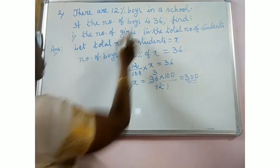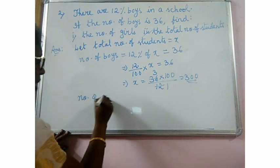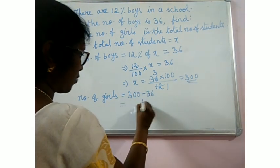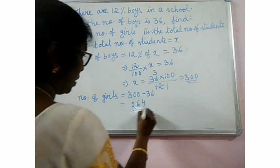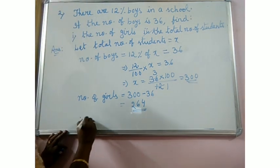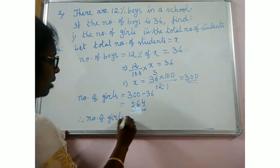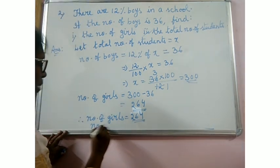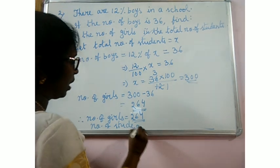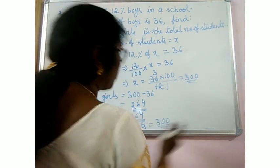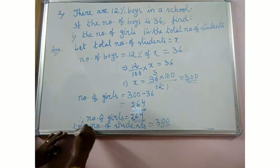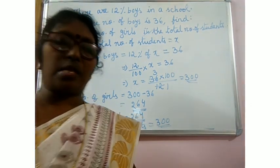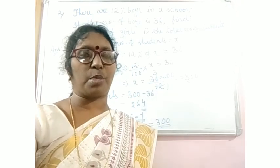Number of boys is given. You have to find the number of girls. The number of girls is equal to total number of students minus number of boys: 300 minus 36 equals 264. Therefore, number of girls is 264 and the number of students is equal to 300. I think it is clear to you. Please go through and try to understand. Thank you.